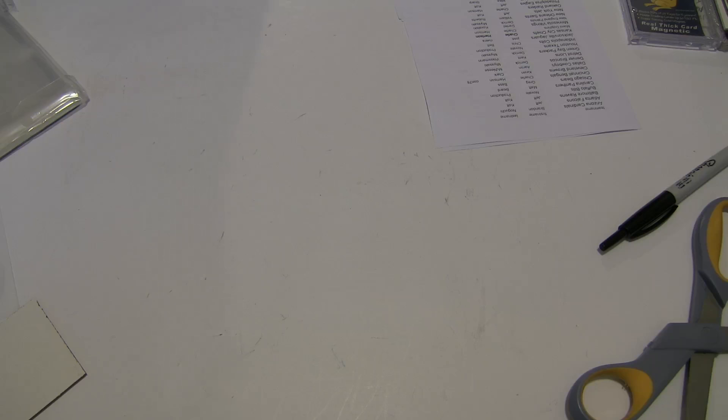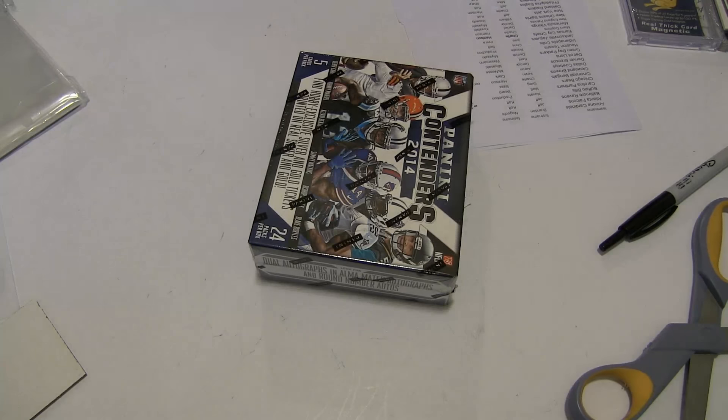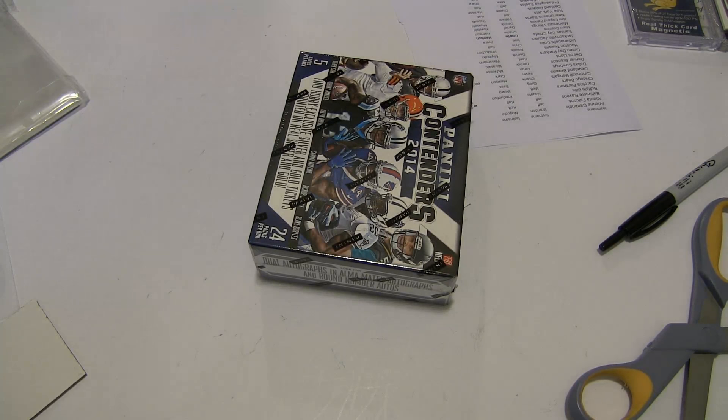All right, Triple Threads, Contenders. Where did I put my boxes? I got one here. Rob didn't take a whole case of Contenders with them. Here's one, we'll go ahead and break one. I think I got to go downstairs. All right, Contenders number 78.